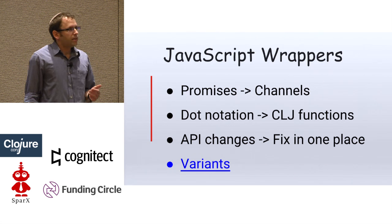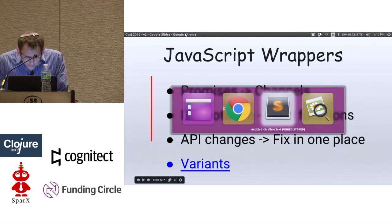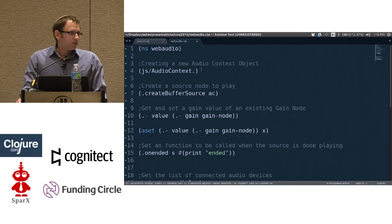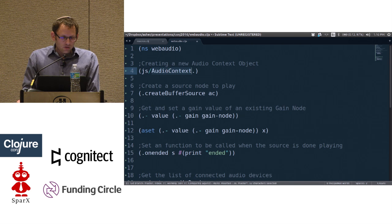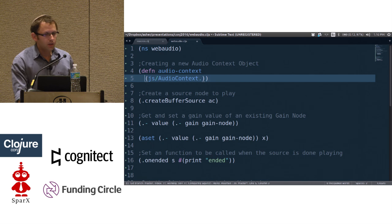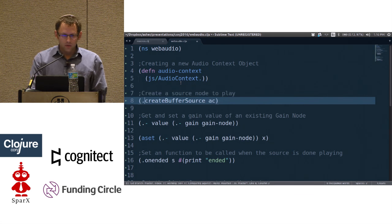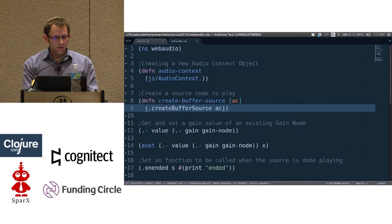Another thing we use is called variants. Since we deal with audio on the web, we use the AudioContext object, which is part of the HTML5 Web Audio interface. In order to build a new AudioContext we have to call its constructor with dot notation, which we don't like. So I'll surround this with a function, and from now on if I want to build an AudioContext object, I'll just call this audio-context function. The AudioContext also has a function that creates a buffer source — once again dot notation — so I'll surround it with a function that receives the AudioContext and returns a buffer source.